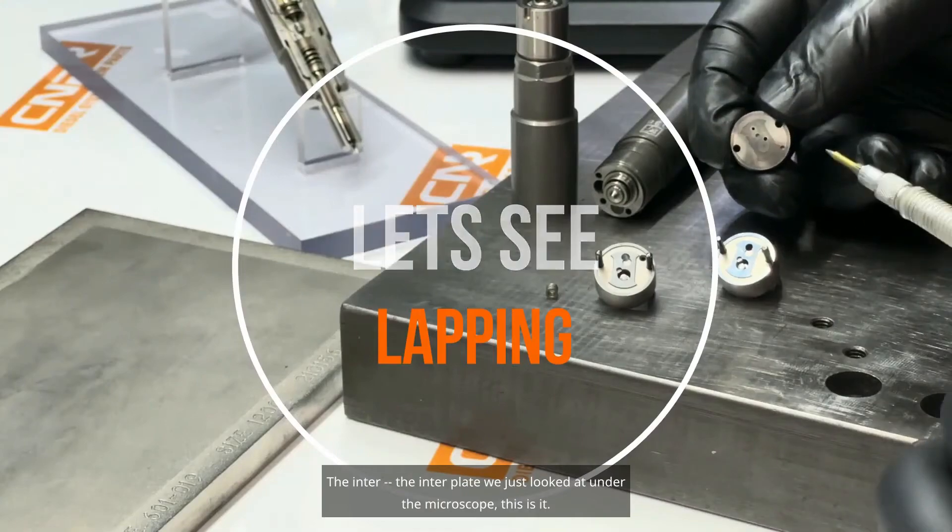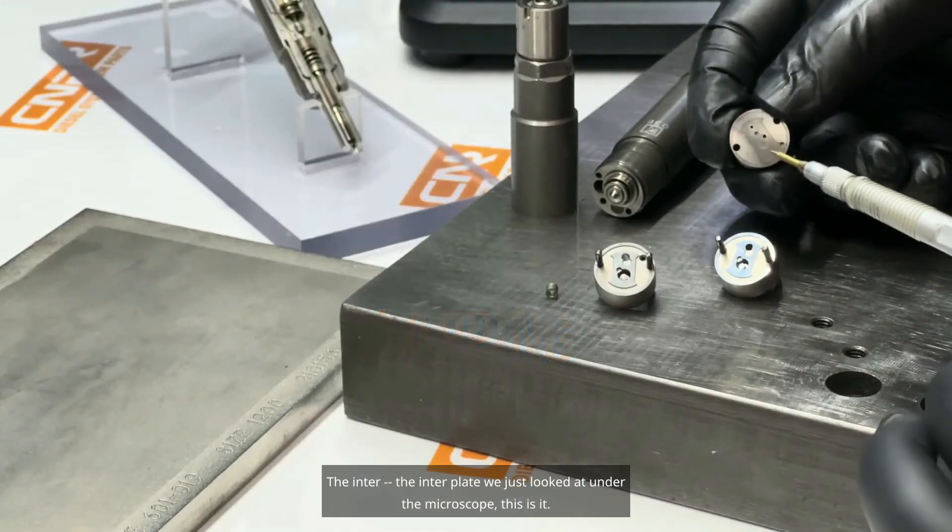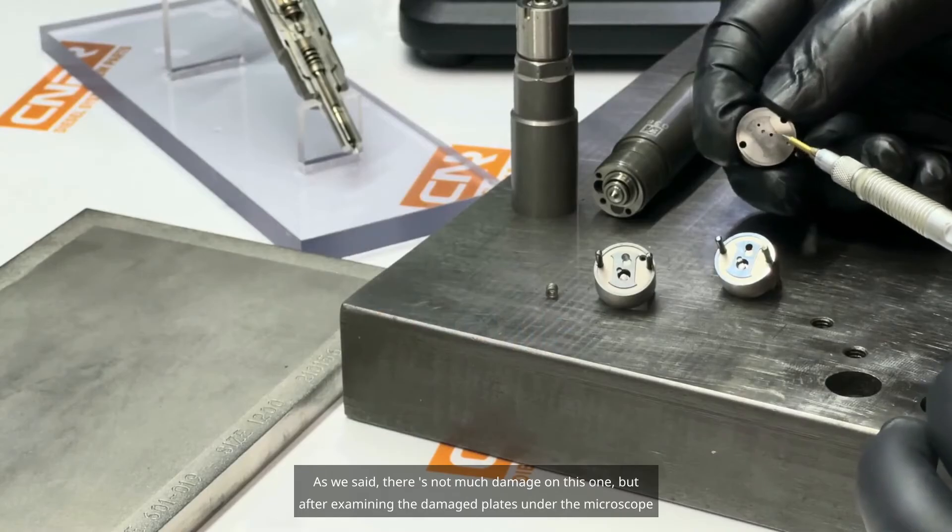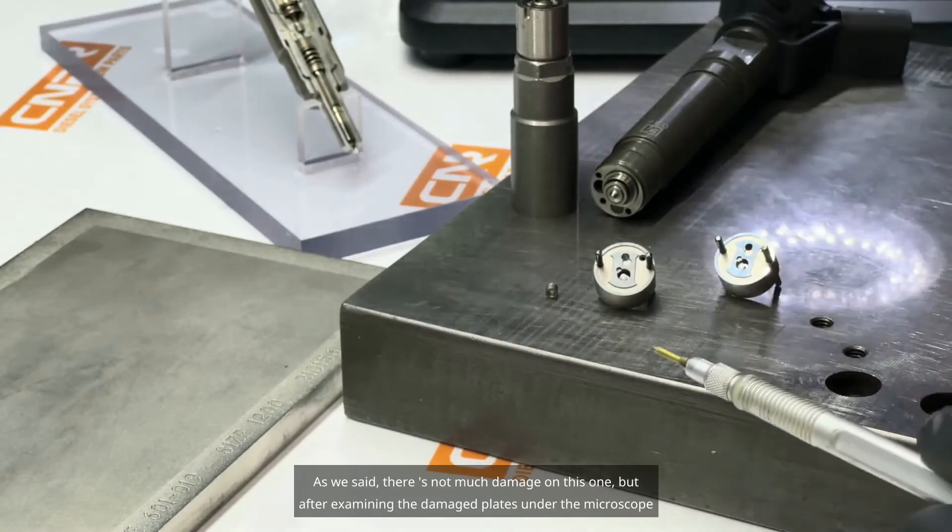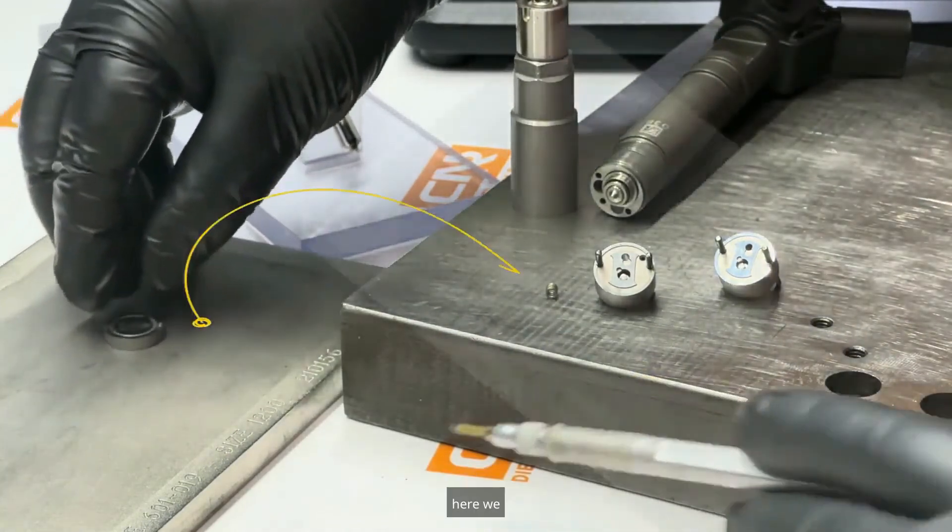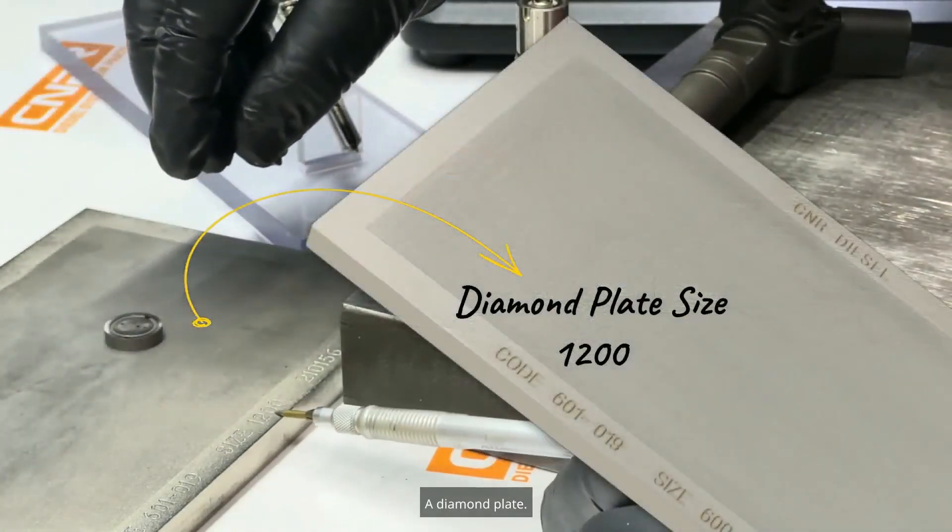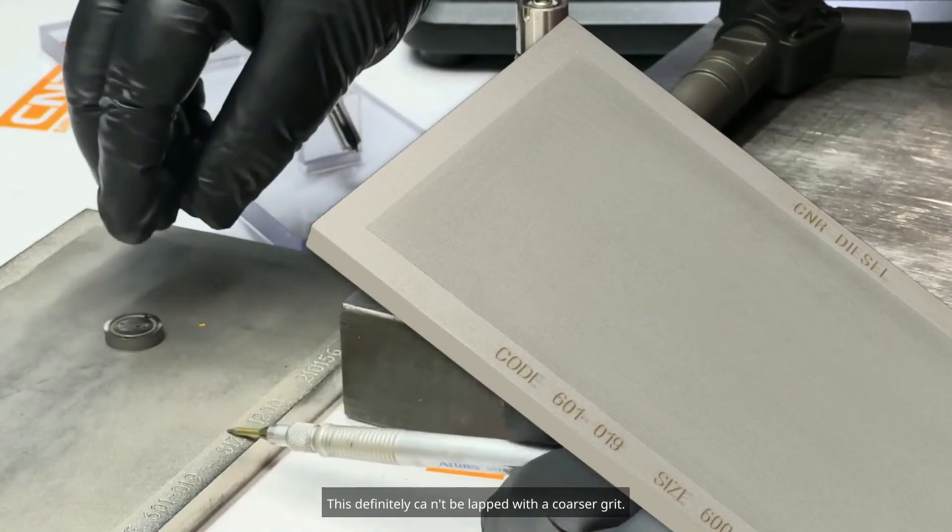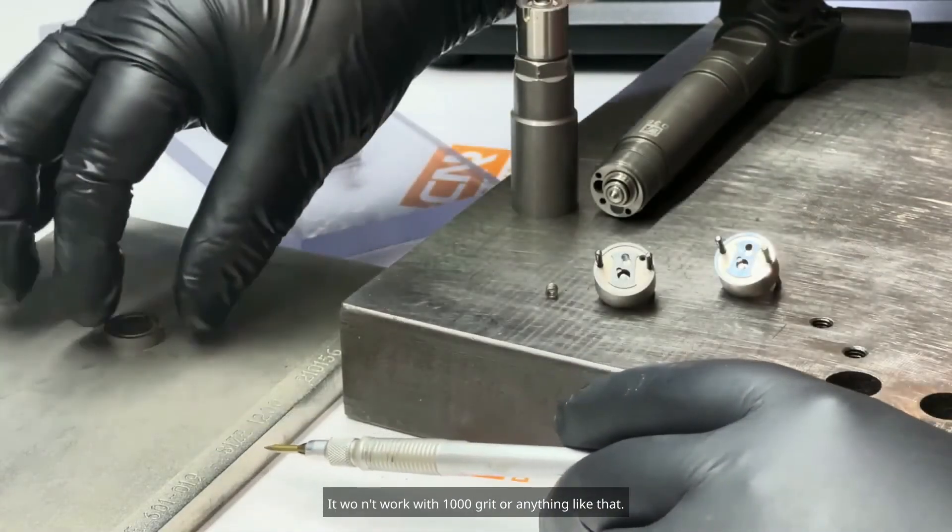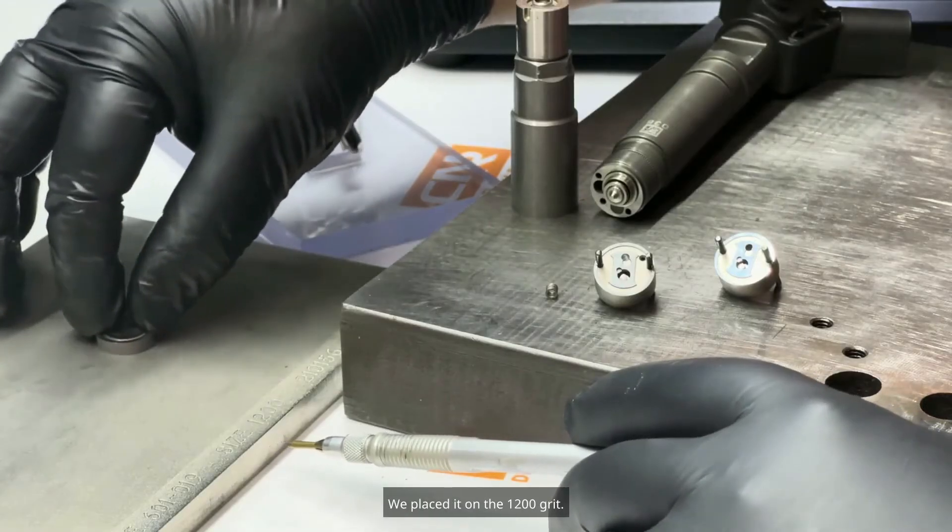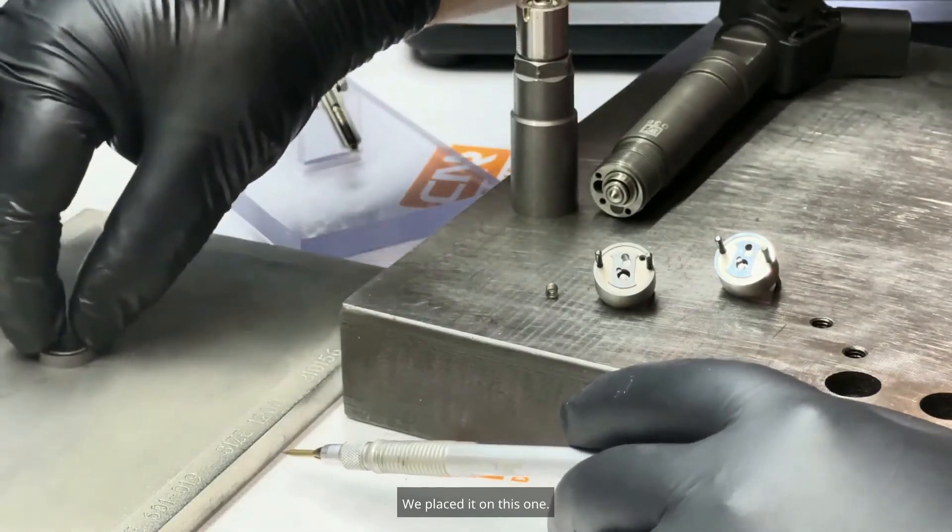The inter plate we just looked at under the microscope, this is it. As we said, there's not much damage on this one, but after examining the damaged plates under the microscope, we have a 1,200 grit plate, a diamond plate. This definitely can't be lapped with a coarser grit. It won't work with 1,000 grit or anything like that. We placed it on the 1,200 grit.